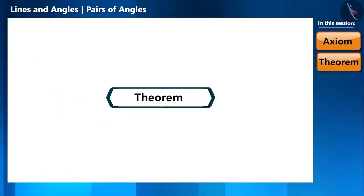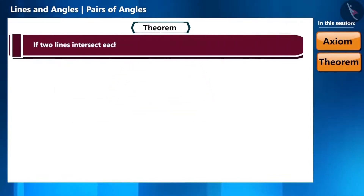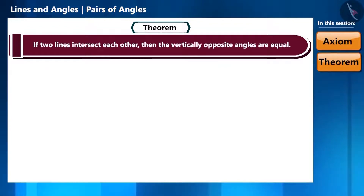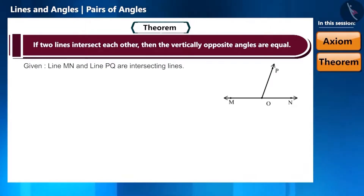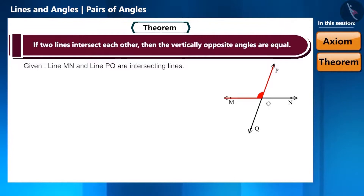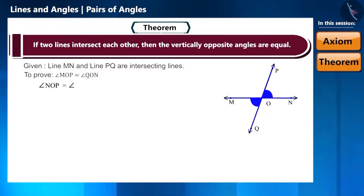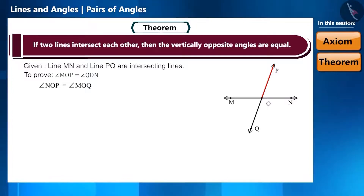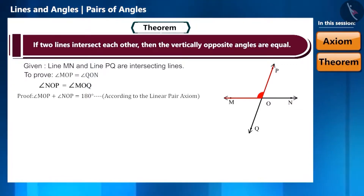Now we move on to the next theorem, which is related to two lines. If two lines intersect each other, then the vertically opposite angles are equal. Let's convert the ray OP into a line in the same given figure. According to the theorem, we have to prove that angle MOP is equal to angle QON and angle NOP is equal to angle MOQ. Keeping the ray OP in mind, can we say that angle MOP plus angle NOP is equal to 180 degrees? Yes, according to the linear pair axiom.